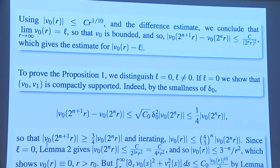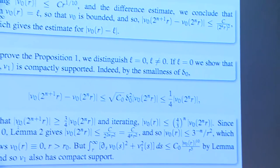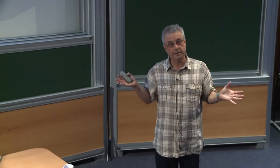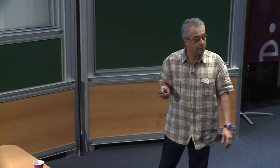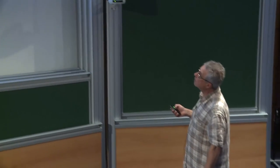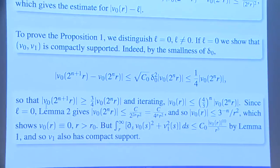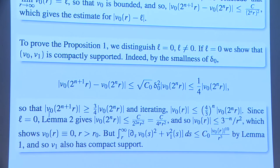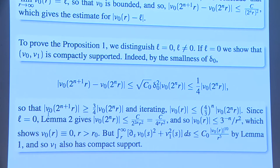Now I will prove Proposition 1: if those two limits as T goes to ±∞ are zero, the only choice is that the data is compactly supported or equals W outside some compact set. We use both lemmas. The limit is L — what happens depends on who L is. If L is zero, we must have compact support. If L is nonzero, we get a plus or minus W.